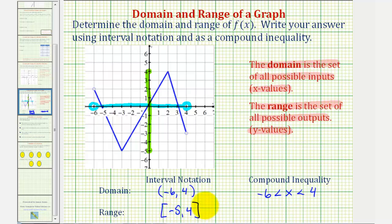And now for the compound inequality, because we're talking about the range, we'll use y instead of x. So y is greater than or equal to negative five and less than or equal to positive four.